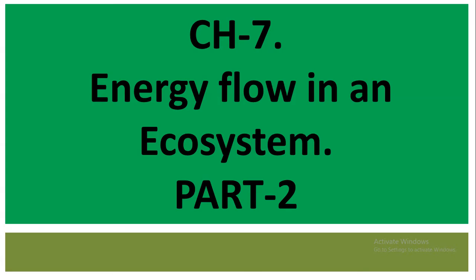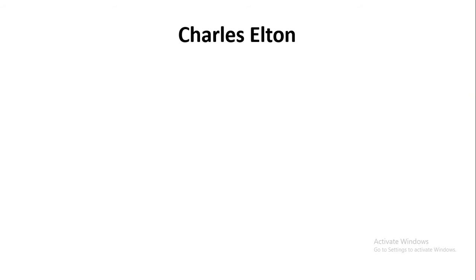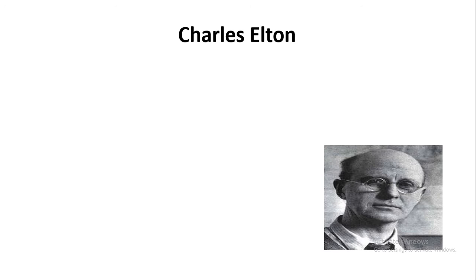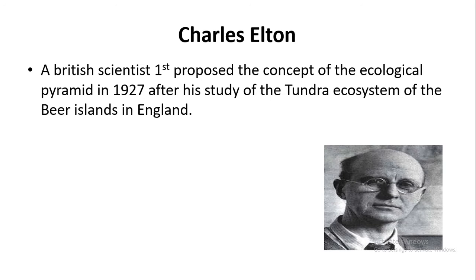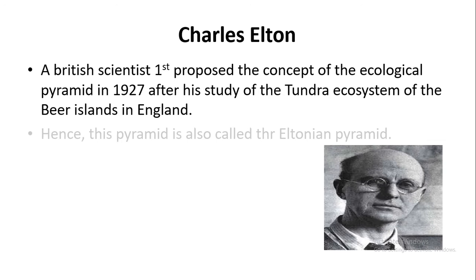Hello everyone. Today we will study about a scientist related to this topic — that is Charles Elton. He is a British scientist. He was the first person who proposed the concept of the ecological pyramid in 1927. He also talked about the tundra ecosystem. Due to his name, this pyramid is also called the Eltonian pyramid.